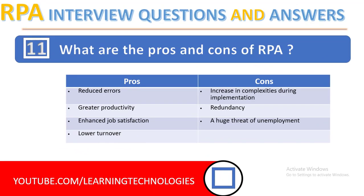Next question: what are the pros and cons of RPA? The pros of RPA are: reduced errors, greater productivity, enhanced job satisfaction, and lower turnover. The cons of RPA are: increased complexity due to implementation, redundancy, and a huge threat of unemployment. These are all the pros and cons of RPA.